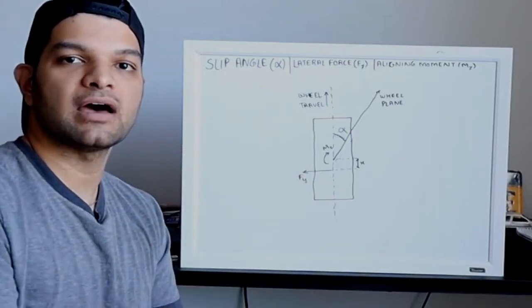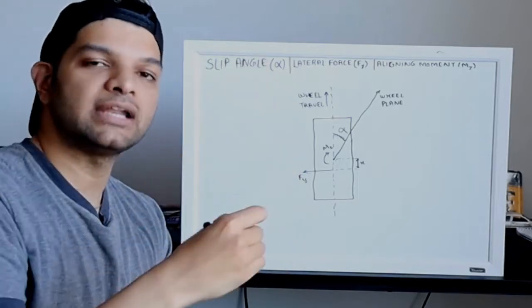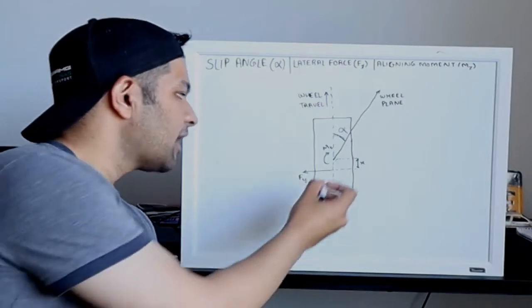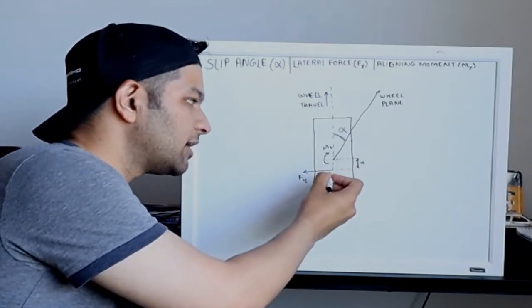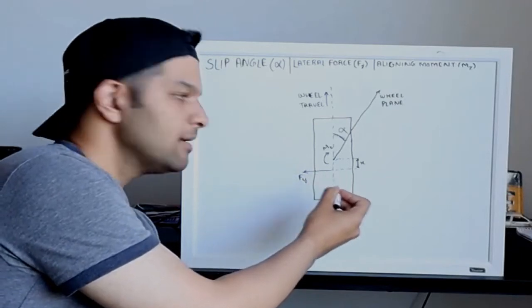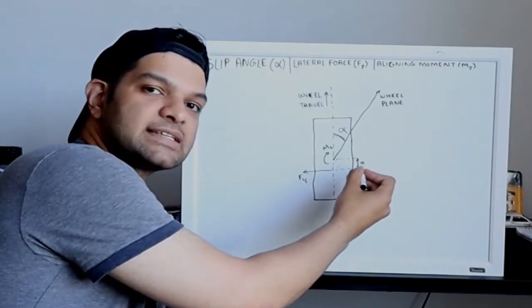And the resultant of these forces actually acts behind the center point of the tire and therefore this lateral force is behind the center point. Consider this to be a distance x.